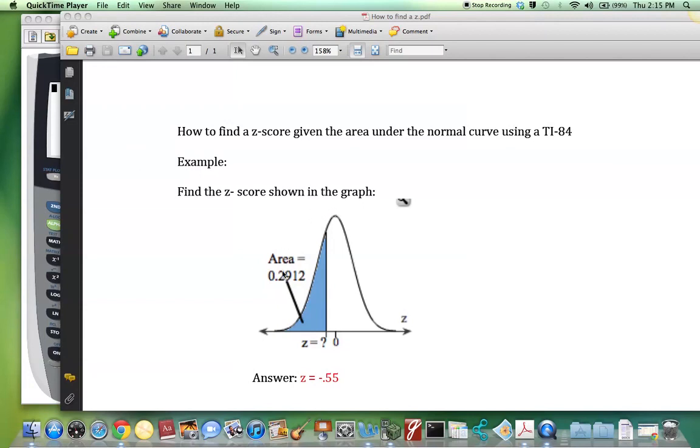In this graph, we're given the area of 0.2912, which is to the left of z, and we're asked to find the z-score associated with that area that's to the left of it. The answer here is z equals negative 0.55.